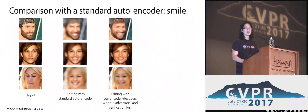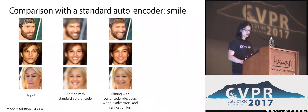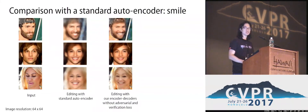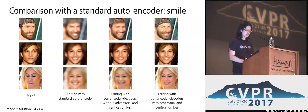We visually compare editing results using the standard auto-encoder versus our method on the smile editing task. Compared to the standard auto-encoder, the physically constrained reconstruction by rendering leads to more natural and physically plausible edits. With the adversarial loss and face verification loss, the edited results look more realistic and better preserve identity after editing.